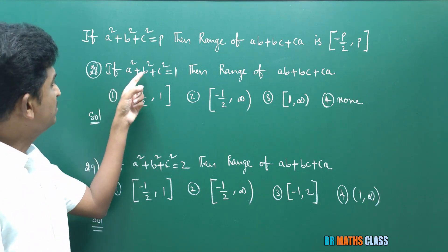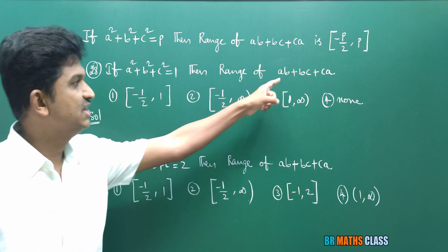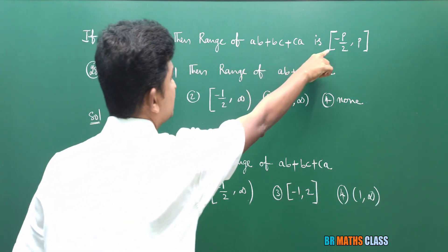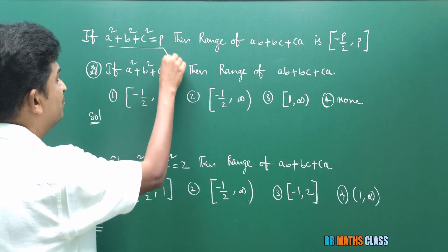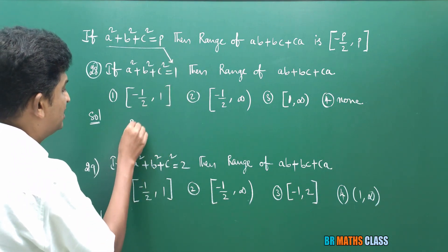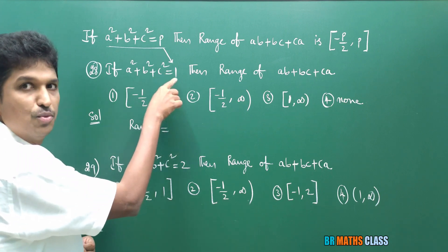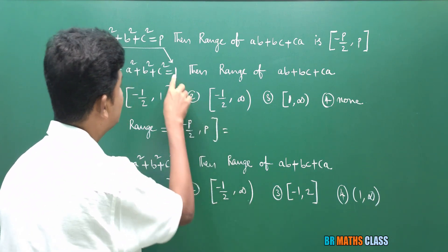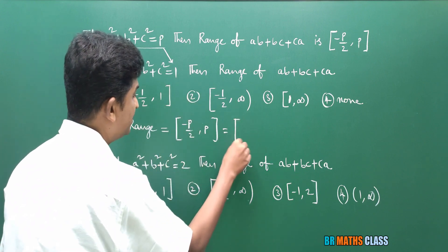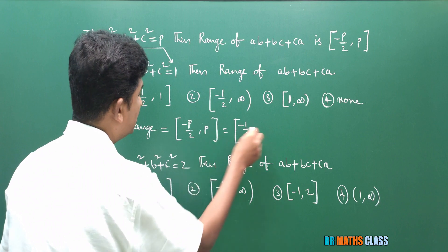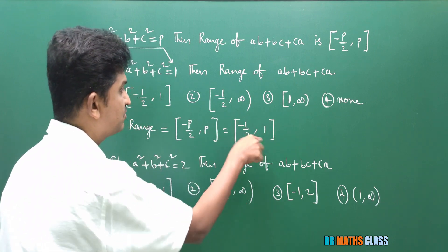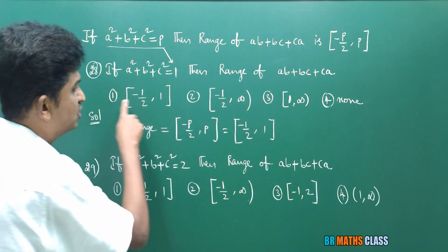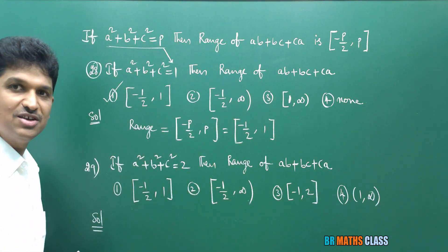Observe question number 28: if A² + B² + C² = 1, what is the range of AB + BC + CA? Using the formula, P = 1. Substituting: range = [−1/2, 1]. So the answer is the closed interval [−1/2, 1], which matches the correct option.